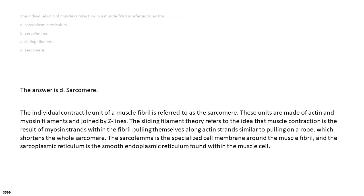The individual contractile unit of a muscle fibril is referred to as the sarcomere. These units are made of actin and myosin filaments and joined by z-lines. The sliding filament theory refers to the idea that muscle contraction is the result of myosin strands within the fibril pulling themselves along actin strands, similar to pulling on a rope, which shortens the whole sarcomere. The sarcolemma is the specialized cell membrane around the muscle fibril, and the sarcoplasmic reticulum is the smooth endoplasmic reticulum found within the muscle cell.